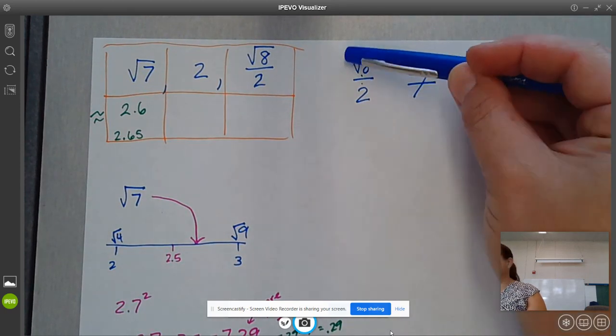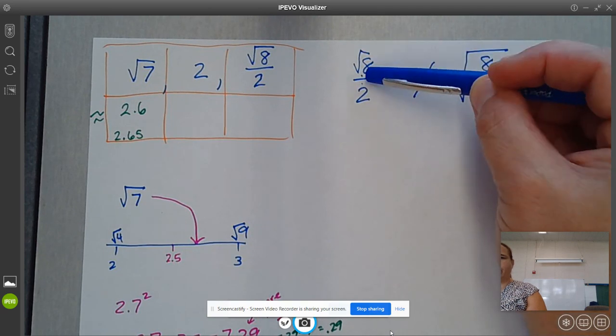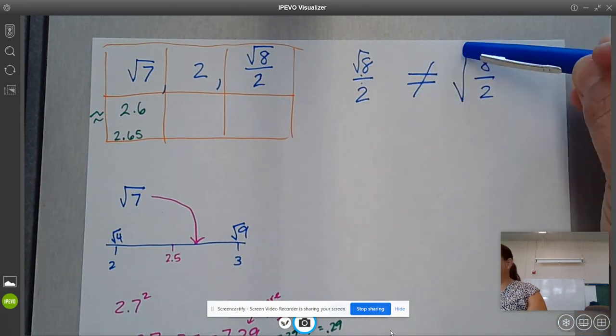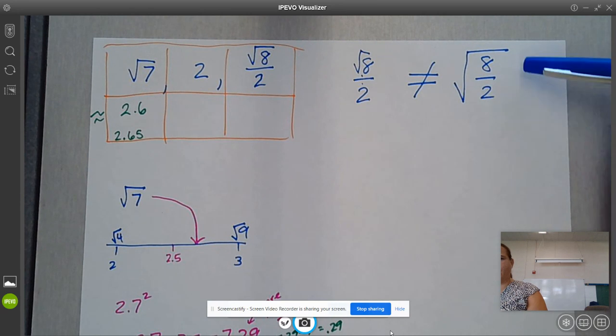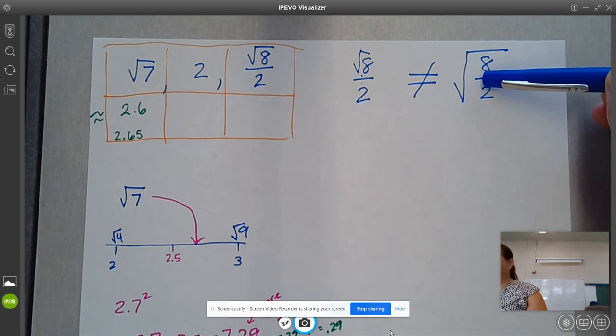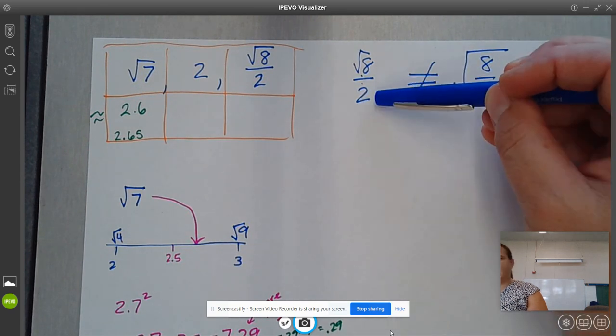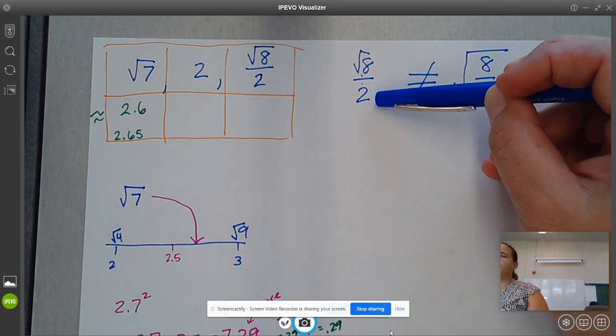This one, the square root is the square root of 8, then you divide by 2. So you have to do the square root of 8 first. This includes the whole fraction, so you would divide first and go from there. This one: 8 divided by 2 is 4, and the square root of 4 is 2. The answer to this is 2. These are not the same. When you're looking at math, you really need to pay attention to the notation.